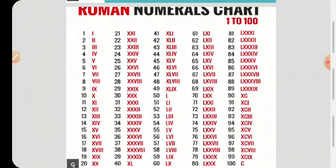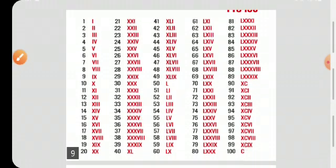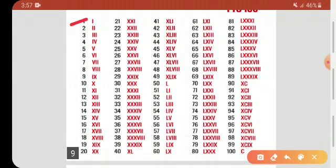Now this is the Roman numeral chart. You can write it down in your notebook and practice them. One: I, Two: II, Three: III, then four: IV, Five: V, Six: VI. As you can see, we have not used I more than thrice.